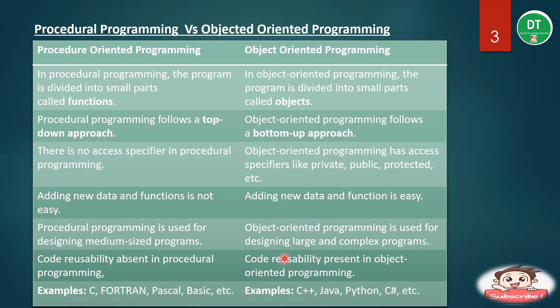Examples of procedure-oriented programming languages are C, FORTRAN, and Pascal. Examples of object-oriented programming languages are C++, Java, Python, C#, etc.